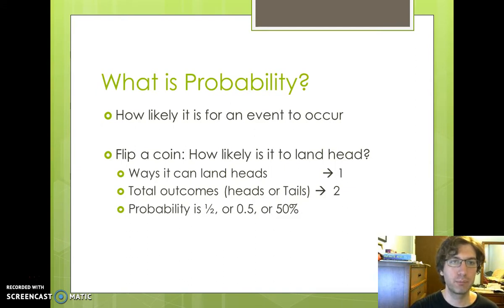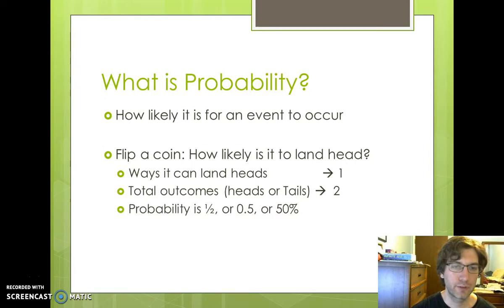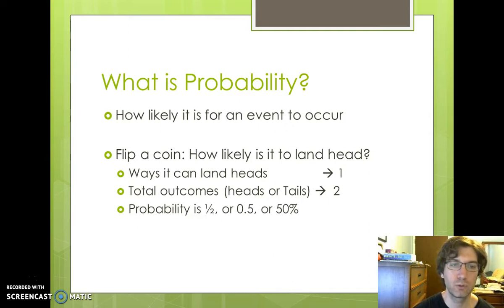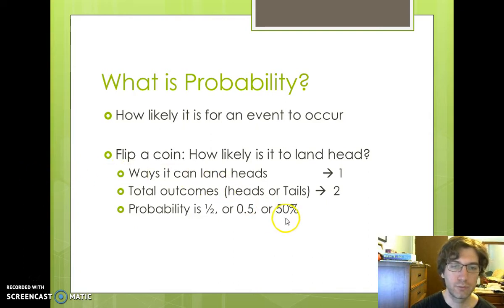Looking at probability — probability is the likelihood that an event is going to occur. For example, if I flip a coin, what's the likelihood that it's going to land heads? You can figure that out by counting how many times it can land heads, which is 1, and you can either land heads or tails. You divide that by the total number of outcomes, which is 2. So the probability is 1 divided by 2, or 1/2, which is the same thing as 0.5 or 50%.